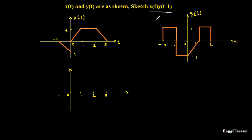Before I proceed, first I need to understand what are all the different operations involved. For x(t), I need to consider the given signal itself. Then I need y(t-1). What is given is y(t), so how do I get y(t-1)? I need to shift this signal to the right by 1. That is the operation on the independent variable time. Later, I need to multiply these two signals — x(t) and y(t-1) — once multiplied, I get the answer.